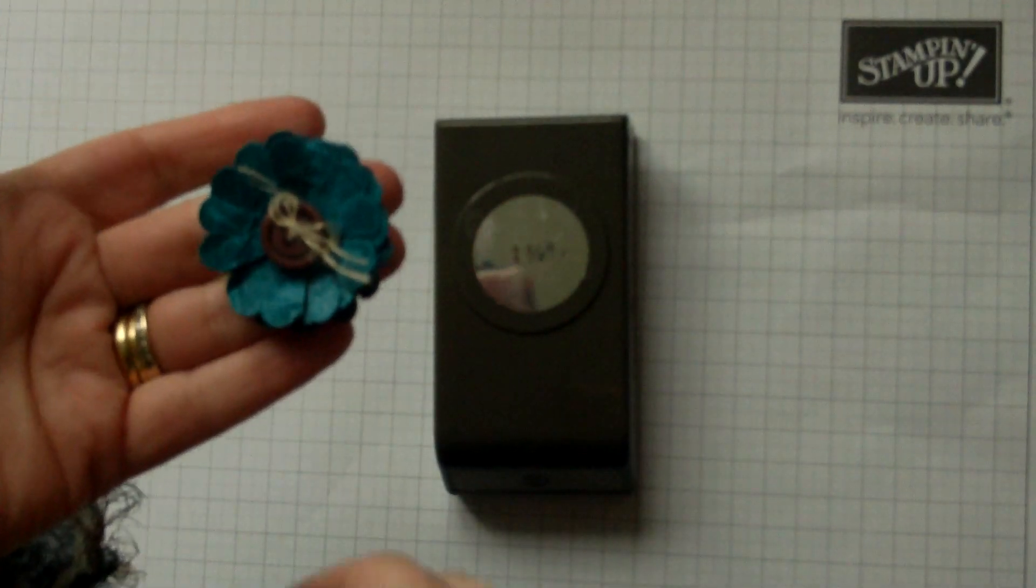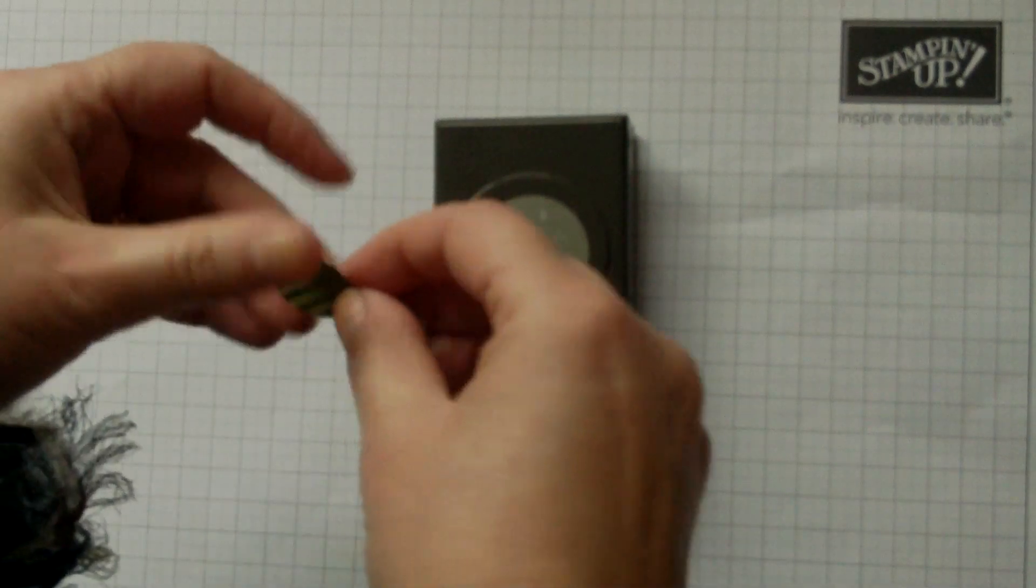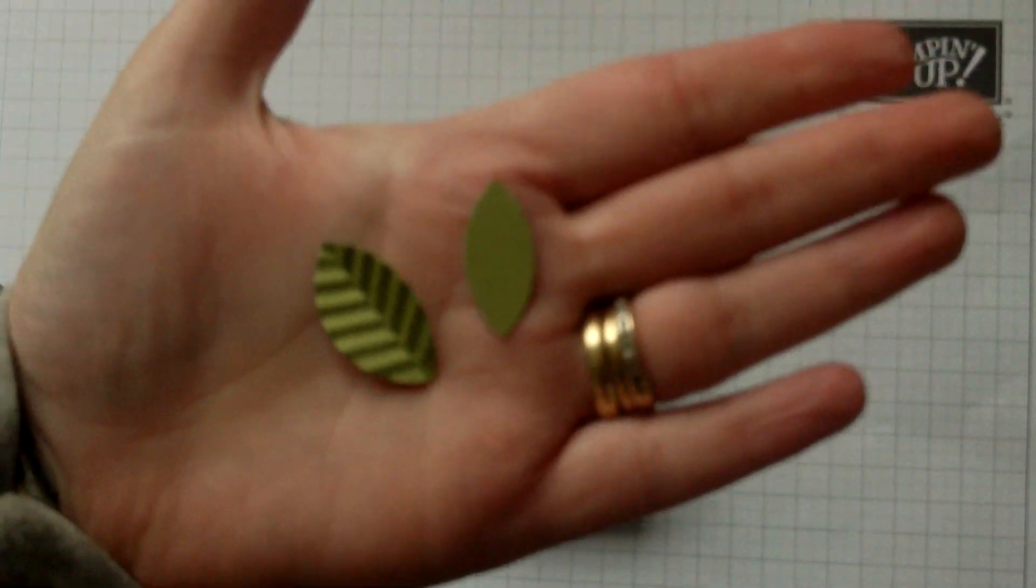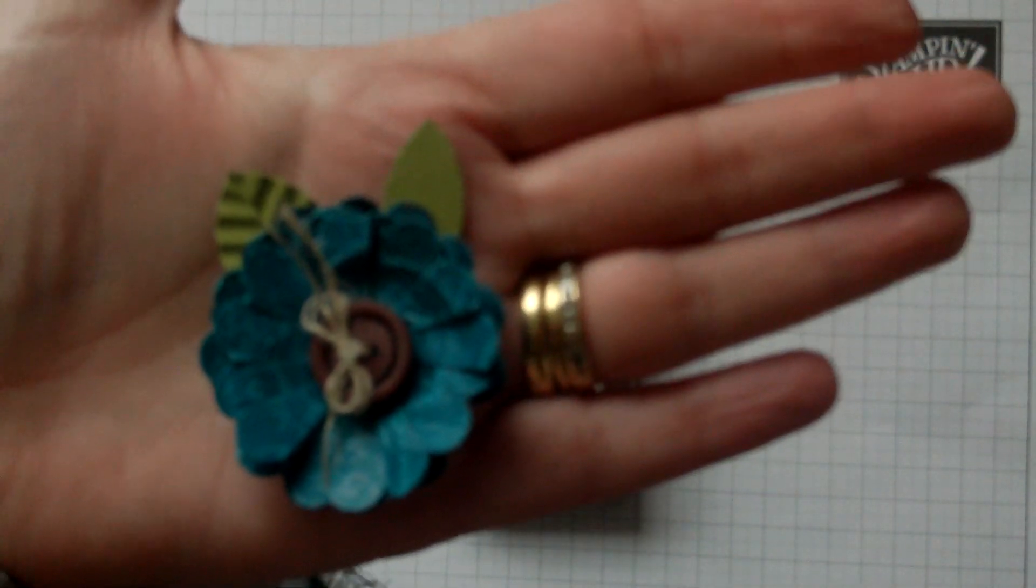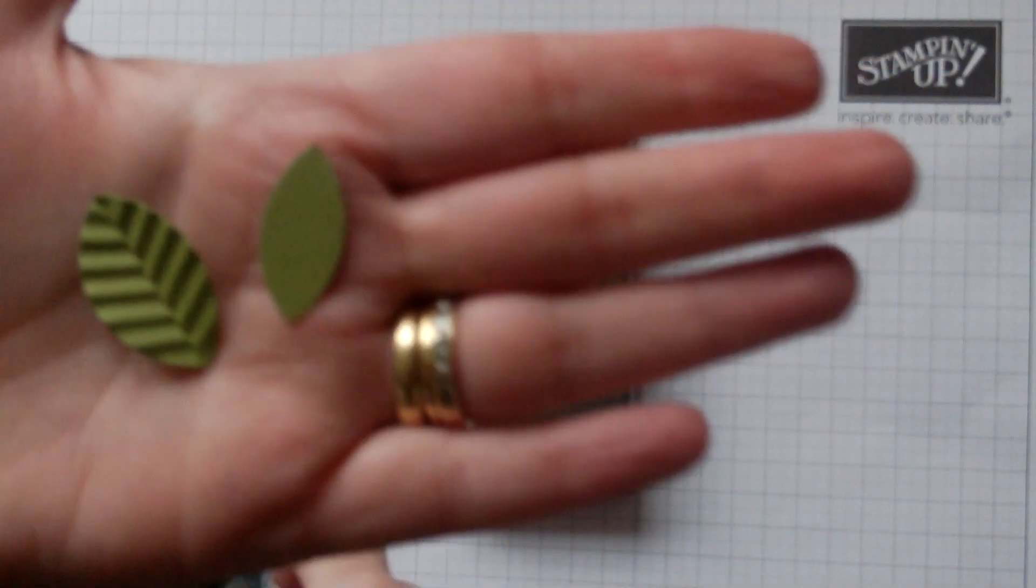Hi everyone, I wanted to show you how we can make these really simple little leaves using a circle punch which can just accent your projects really nicely. So I'm going to show you how to do both the different types.